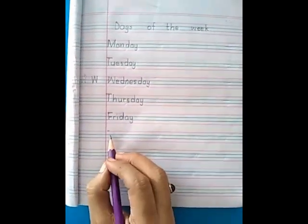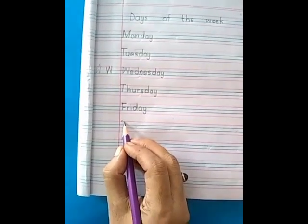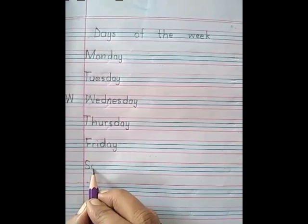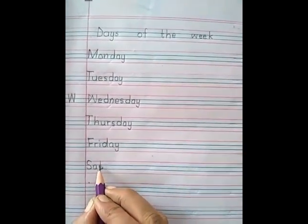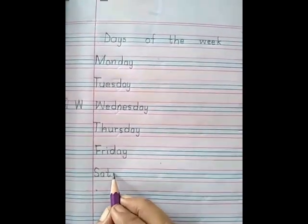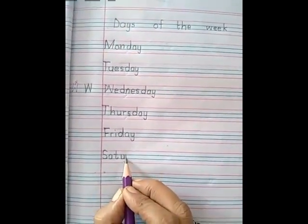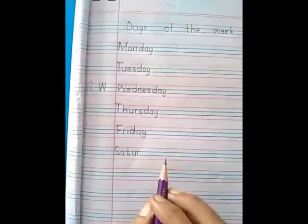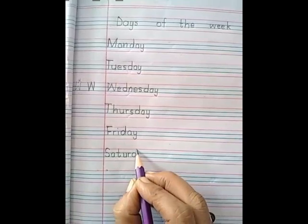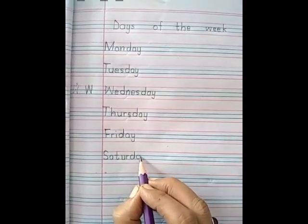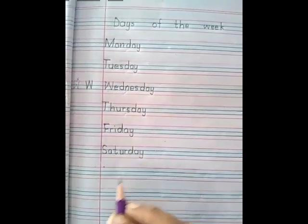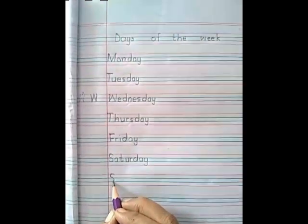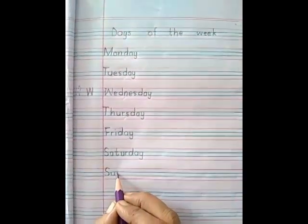Now what comes next? Saturday. It's a big spelling, just break it. S-A-T-U-R, Saturday. D-A-Y, day. And the last one is Sunday. S-U-N, Sunday. D-A-Y, day.